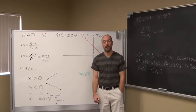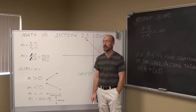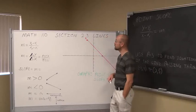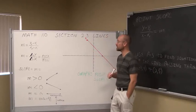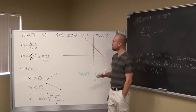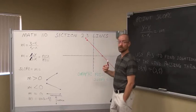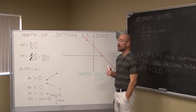Hello, and welcome to Bay Colleges online lectures for College Algebra. This is section 2.3, which deals with lines. The first thing we're going to look at is slope — finding the slope of a line.